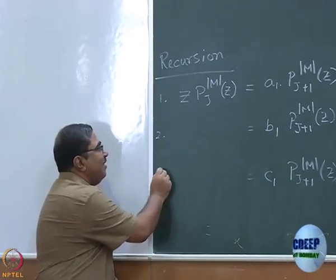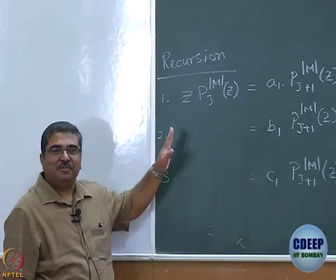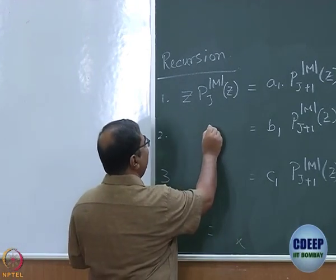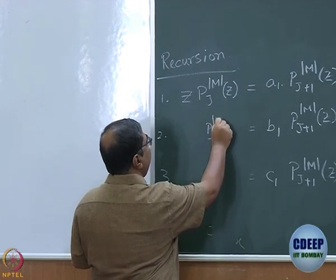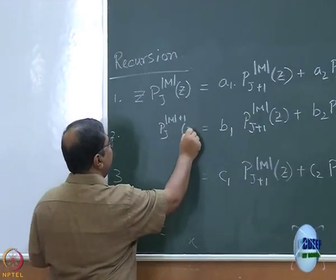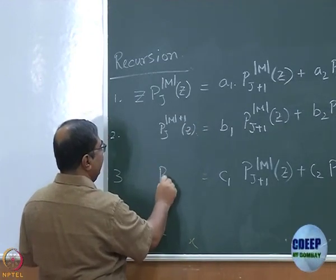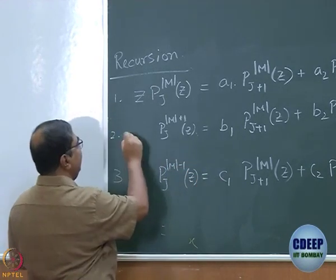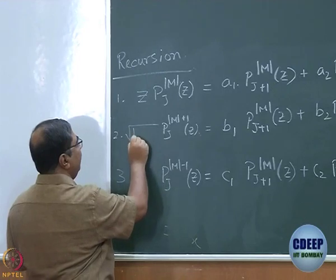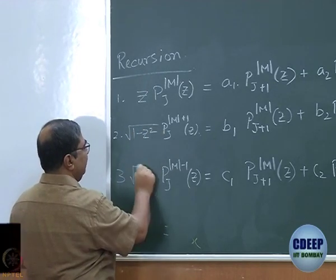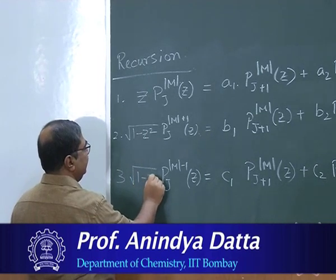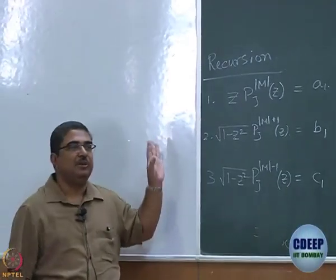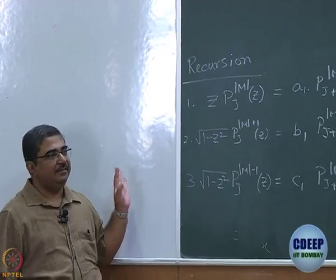What are the left hand sides? Do you know this? I'll write it. The left hand side, in one case you have P_J^{|M|+1}(Z), in the other case you have P_J^{|M|-1}(Z), and it is multiplied by square root of 1 minus Z square. This is also multiplied by square root of 1 minus Z square. So these two are a little more complicated than the first one, but nothing that should actually scare us.